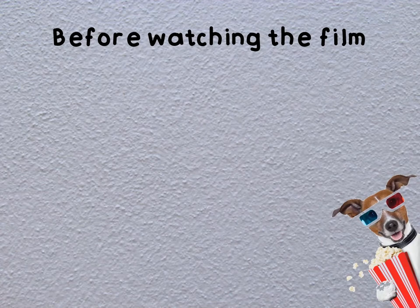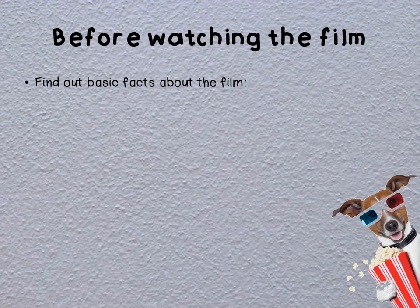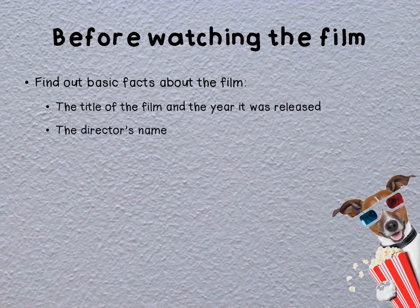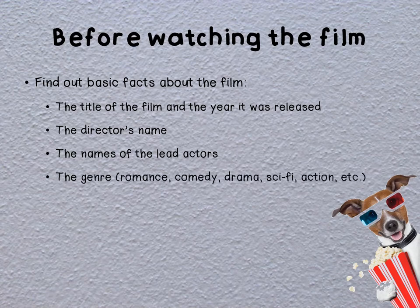You will need to choose a film that you would like to review. However, before you even watch the film, you would need to find out some basic facts about the film. Here is what you need to find out: the title of the film and the year it was released, the director's name, the names of the lead actors, and the genre — whether the film you've chosen to review is a romance, a comedy, drama, sci-fi or an action film. These are some of the details that you will need to include when writing your film review.